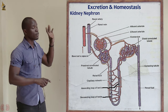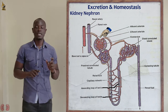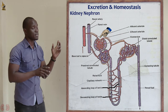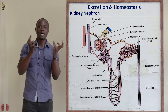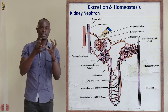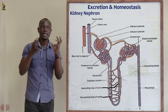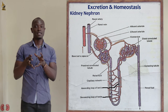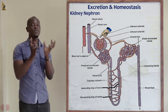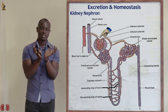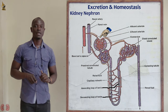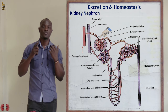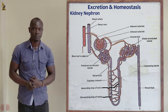The glomerulus is found inside the Bowman's capsule. The glomerulus is simply a dense pack of blood capillaries found inside the Bowman's capsule. This is the place where the ultrafiltration process takes place.